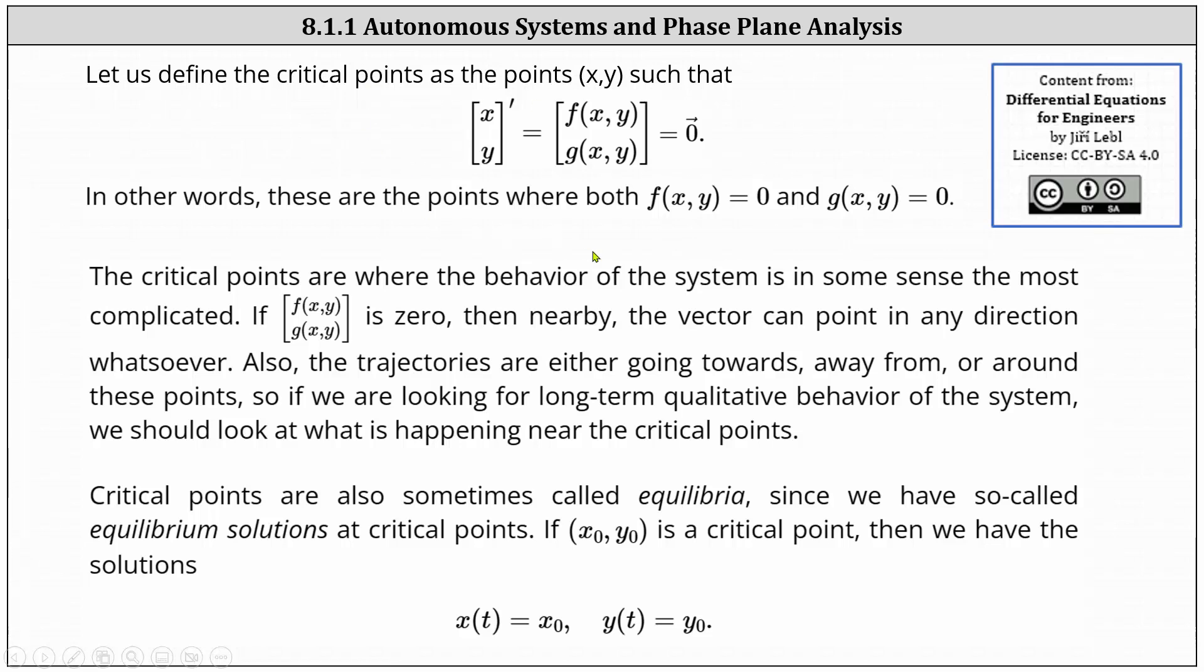The critical points are where the behavior of the system is in some sense the most complicated. If the vector [f(x,y), g(x,y)] is zero, then nearby the vector can point in any direction whatsoever. Also, the trajectories are either going towards, away, or around these points. So if we're looking for long-term qualitative behavior of the system, we should look at what is happening near the critical points.